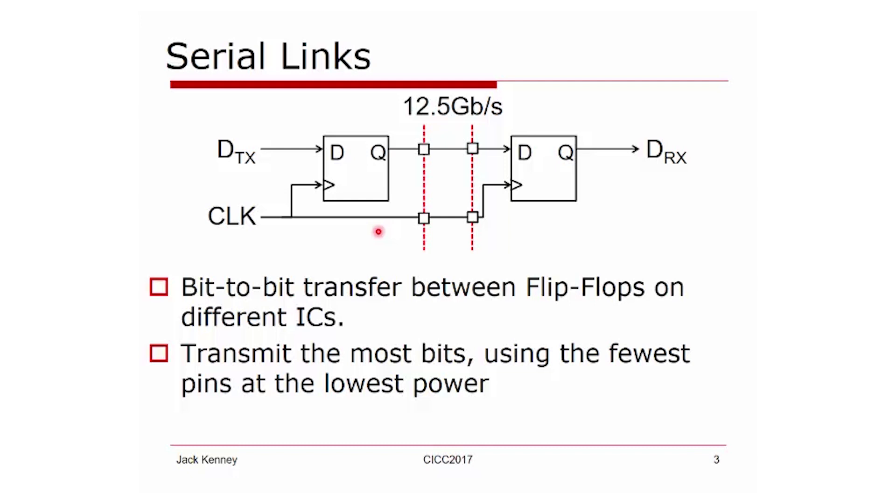Currently data converters have serial links that operate at 12.5 gigabit per second. Emerging standards will head towards 32 gigabit per second and with some coding efficiencies the goal is to get rid of about two-thirds of the wire.